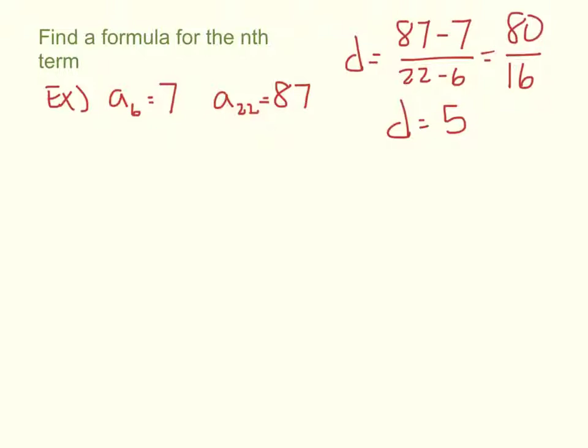Which term would you rather use? The a₆ equals 7? Yeah, that's what I would do as well, because it's easier numbers. So aₙ. I'm going to write down the general form again. aₖ plus (n-k) times d.